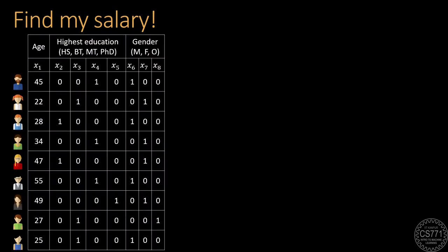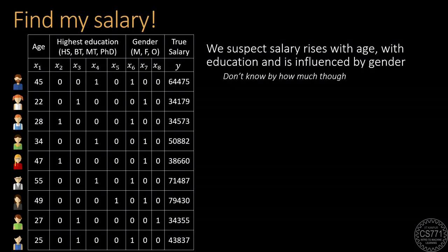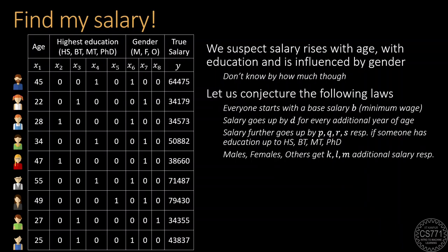Now that we know how to give and take input and output from the machine learning model, let us shift our focus to the model itself. To do so, let's take a toy example where we wish to predict the salary of our users given some of their personal details such as age, gender and educational qualifications. Note that in this case, our training data will have examples of several users with all their personal details as well as their true salary. Now, in order to build the machine learning model, we need to build some intuition about this task. We might suspect that salary of a person would rise with age, with education level and may also be influenced by gender. But we don't know how much each of these factors influence the salary.